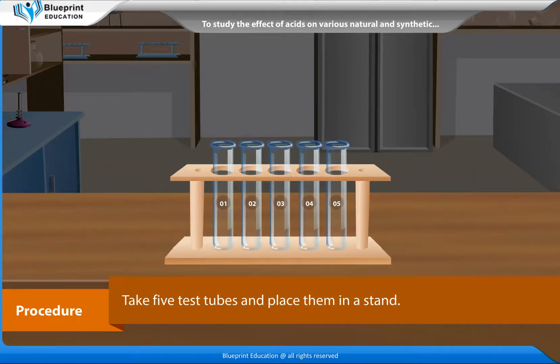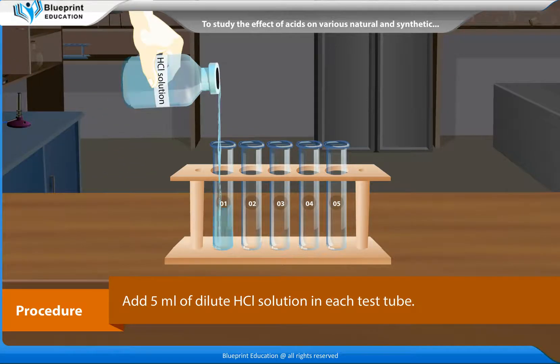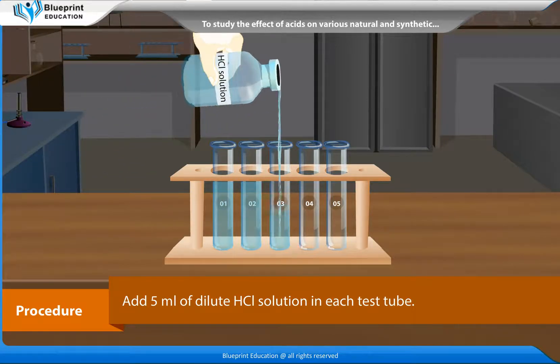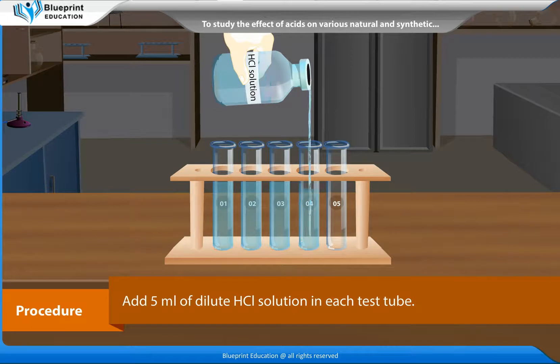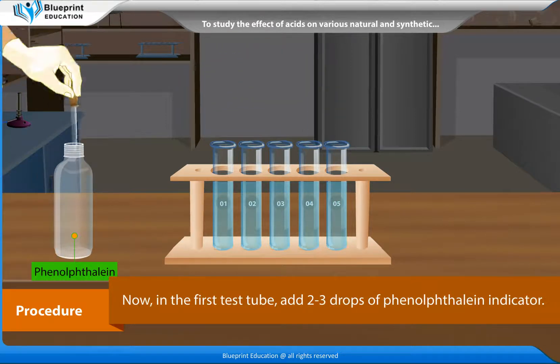Procedure: Take 5 test tubes and place them in a stand. Add 5 ml of dilute hydrochloric acid solution in each test tube.